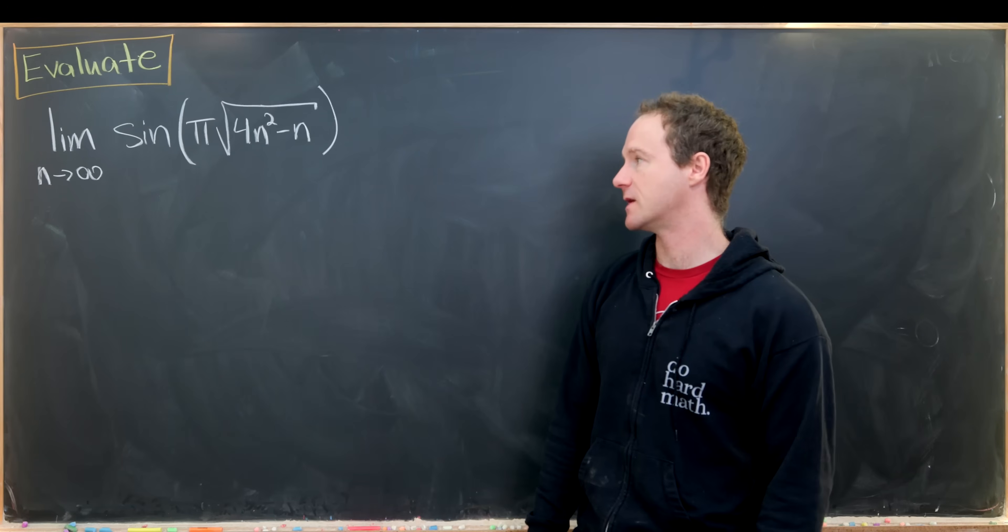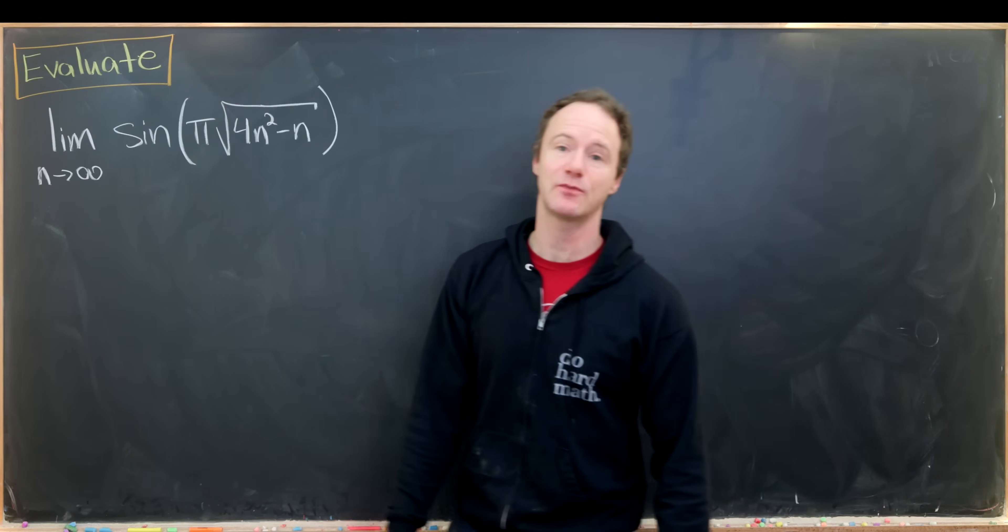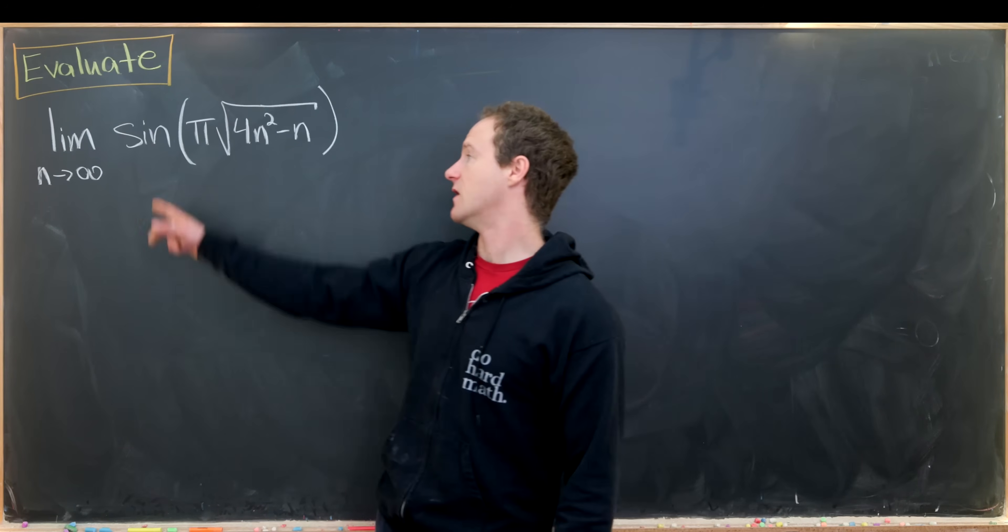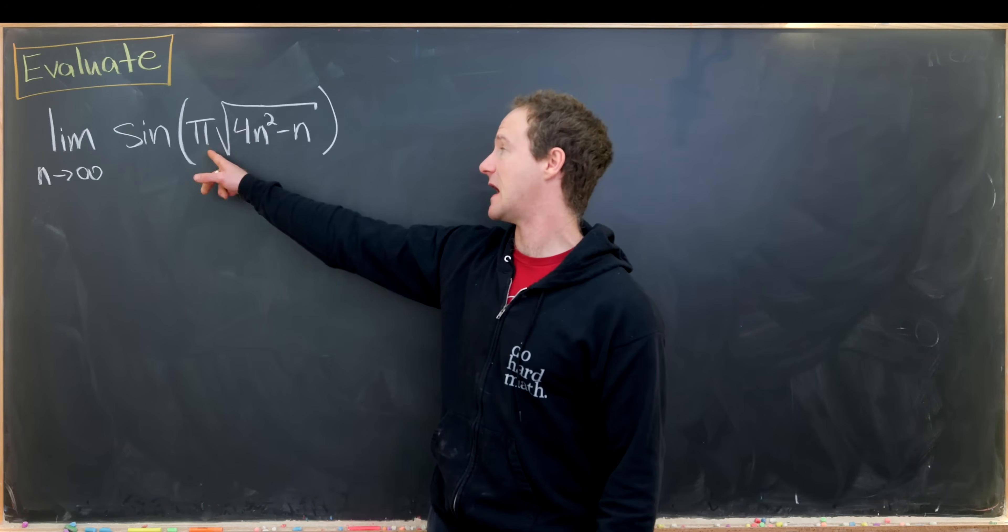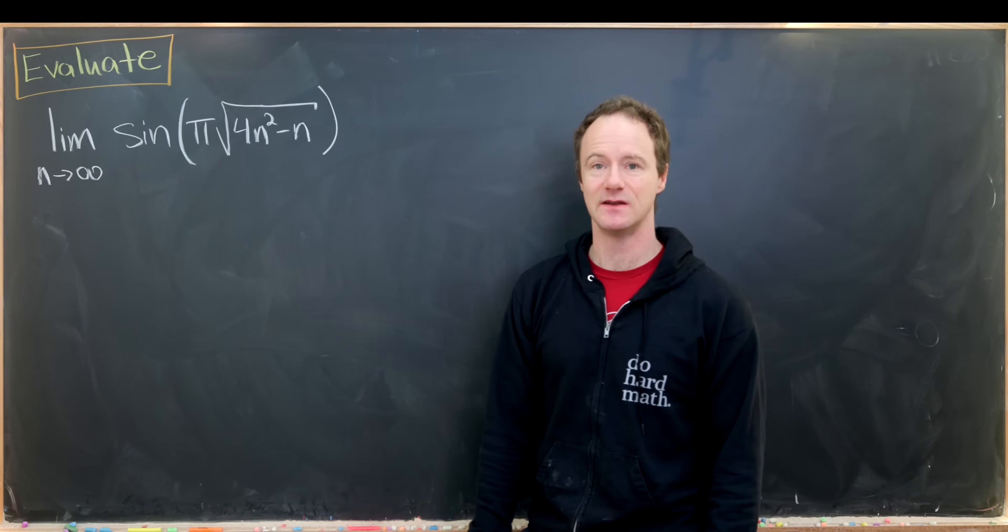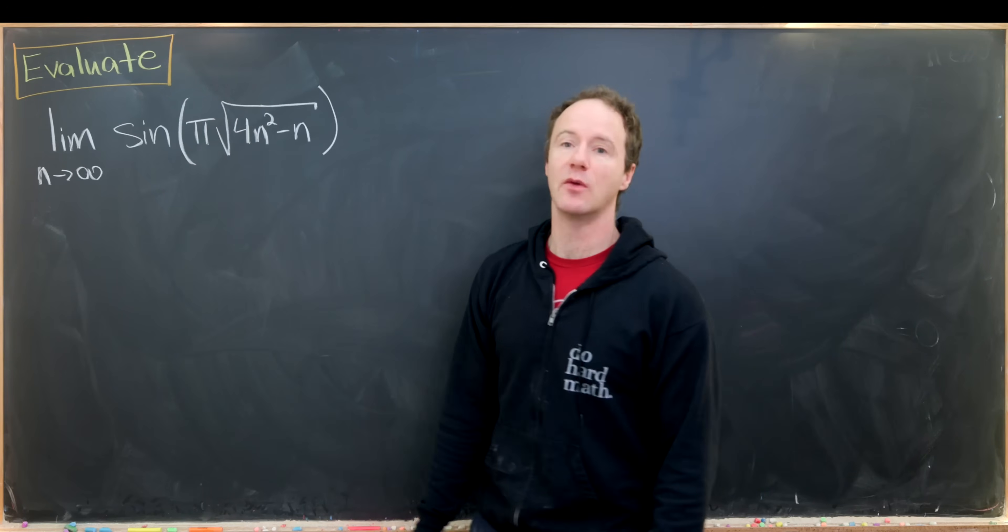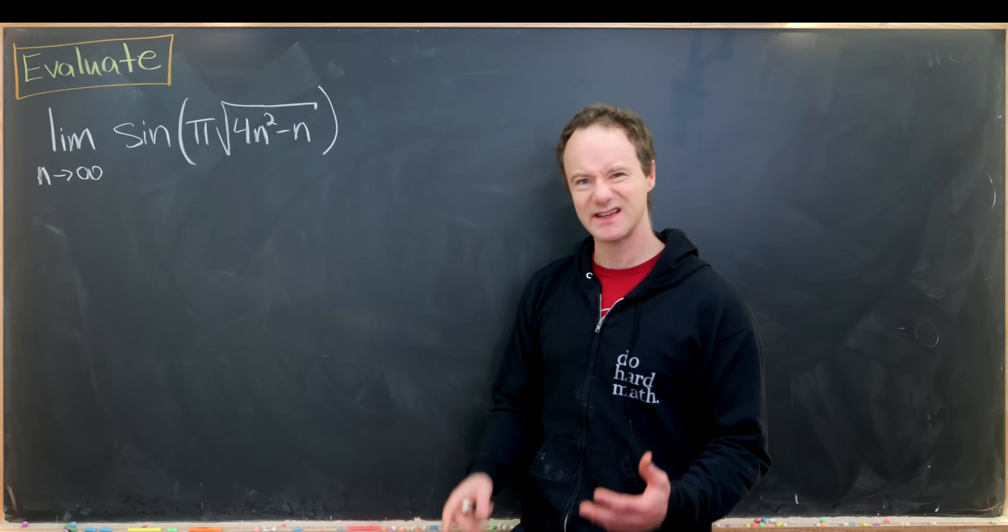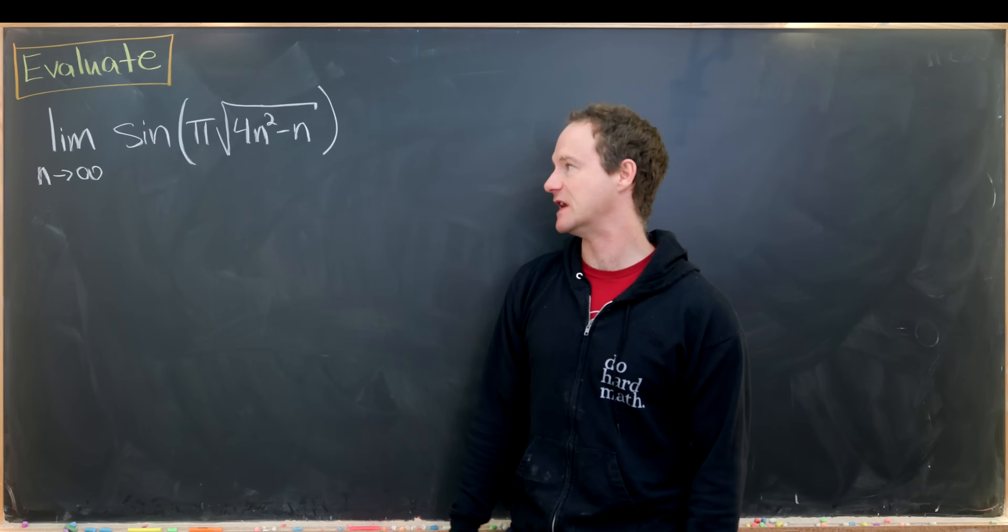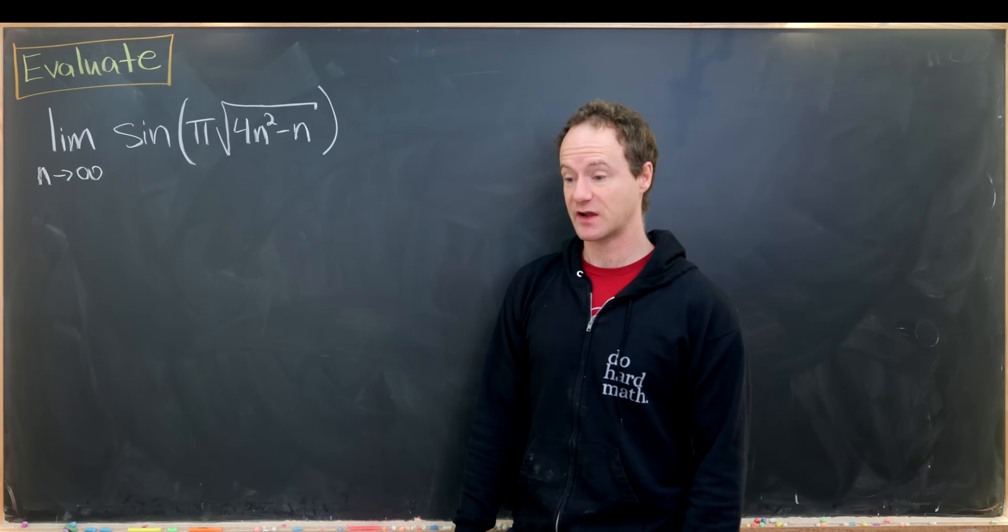Okay so let's look at what we've got. Our goal is to find the limit as n approaches infinity of sine of pi times the square root of 4n squared minus n. So let's notice the tricky thing about this is that the argument here approaches infinity. So you're looking at something like sine of infinity which clearly doesn't make sense. And that's where the trick comes in.